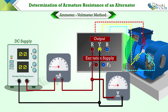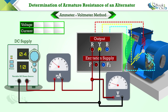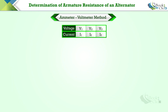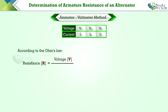Keep the field winding open. Now adjust the DC supply and record the ammeter and voltmeter readings for three different DC voltage inputs. According to Ohm's law, we can calculate the resistance value by dividing the voltage by the current.